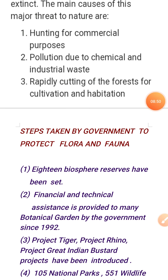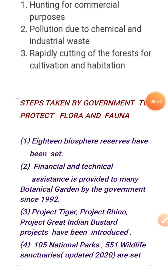The next cause is the rapid cutting of forests for cultivation and habitation. The root cause is population explosion — to house and feed the growing population, we have converted forest area into cultivated farmland. This has destroyed the natural habitats of different animal and plant species, pushing them toward extinction.